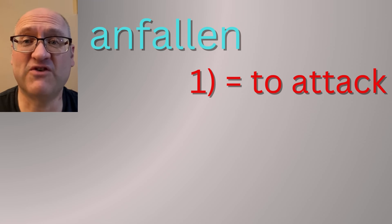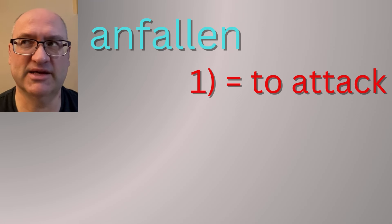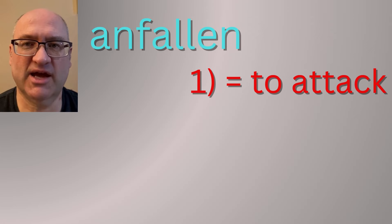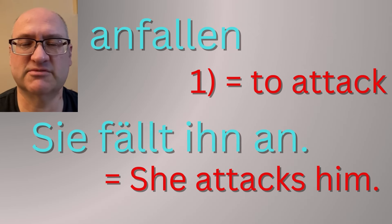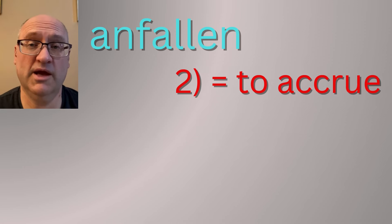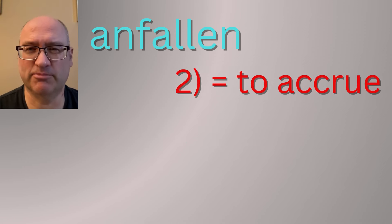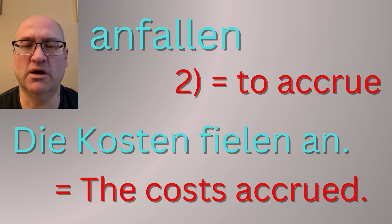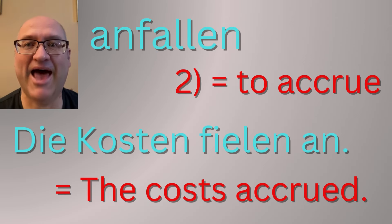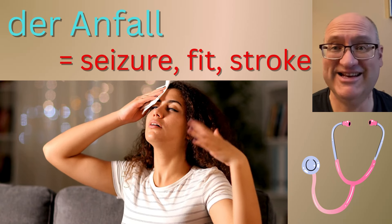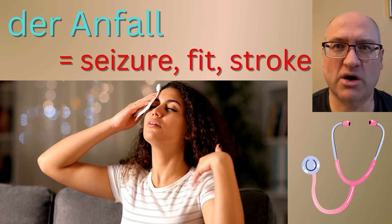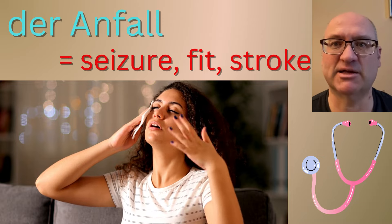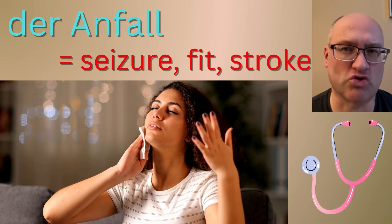The verb 'anfallen' actually has two meanings. It can mean 'to attack' — for instance, 'sie fällt ihn an' means she attacks him. It can also mean to accrue, to gather, to collect, but not in a positive way, in a negative sense. It's used with things like costs — for instance, 'die Kosten fielen an,' the costs accrued, the costs added up. The noun 'der Anfall' means not so much a physical attack, but more of a medical attack, like a seizure or a fit, maybe a stroke.